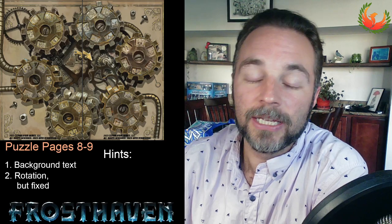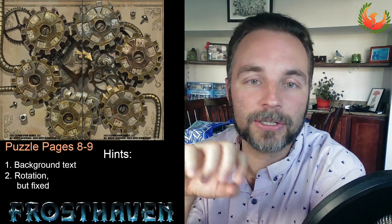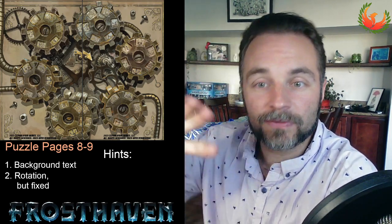So after you have read this background text, you might be interested in hint two here. Hint two is that this is a rotation, but the things are fixed, right? So it kind of described this in the text. It's not entirely clear. It's kind of described a little bit in this picture here. But this whole thing rotates around and each of the gears rotates around, right? And everything goes clockwise.